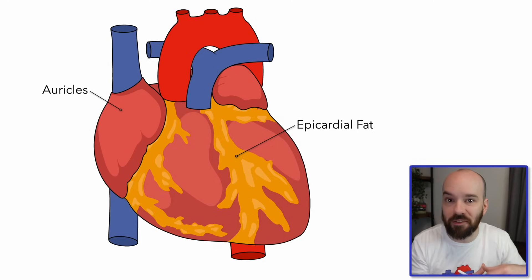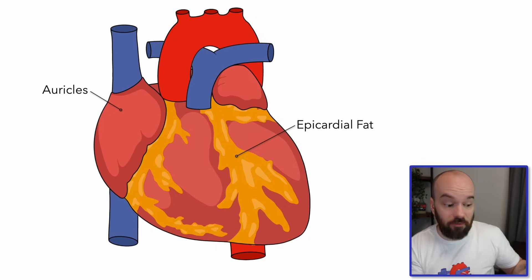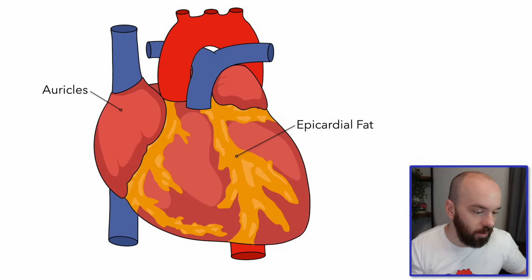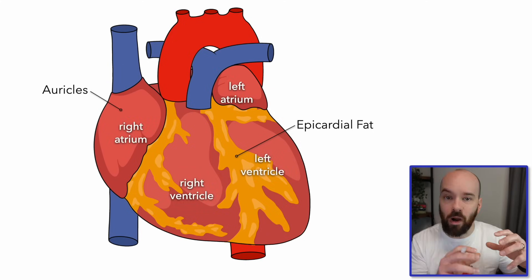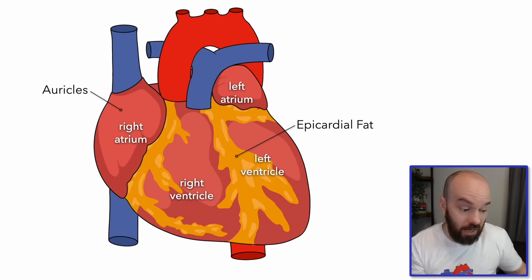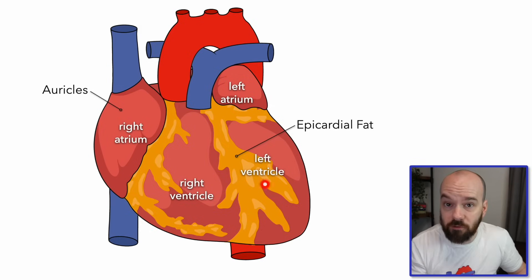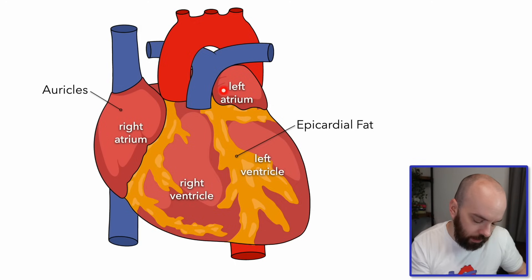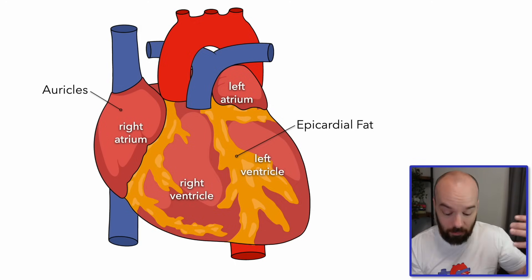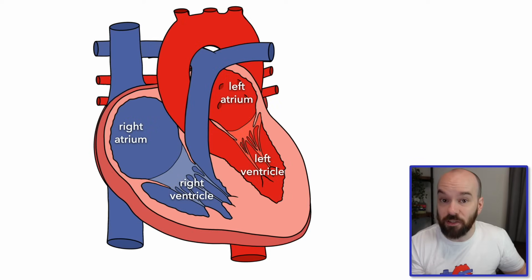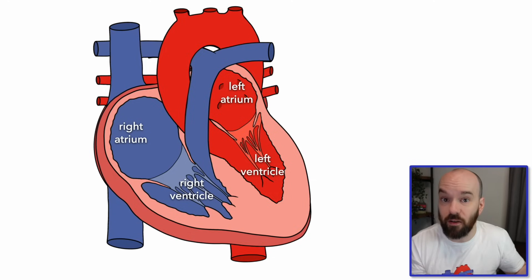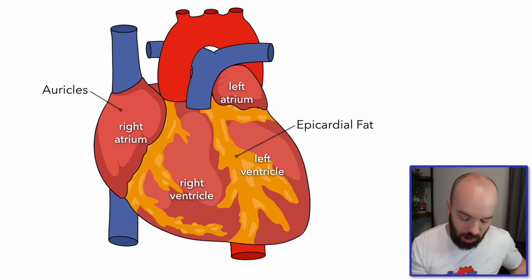The epicardial fat acts as a cushion or protection for those coronary arteries — fat is a bit more cushiony than muscle — and it can also act as a source of nutrients for the coronary arteries when needed. Another cool thing is that you can use these coronary arteries to visually determine where the different chambers of the heart are just by looking at the outside. For example, one coronary artery separates the right atrium from the right ventricle, another separates the two ventricles, and another separates the left atrium from the left ventricle. A diagram of the heart chambers lines up exactly with those positions.